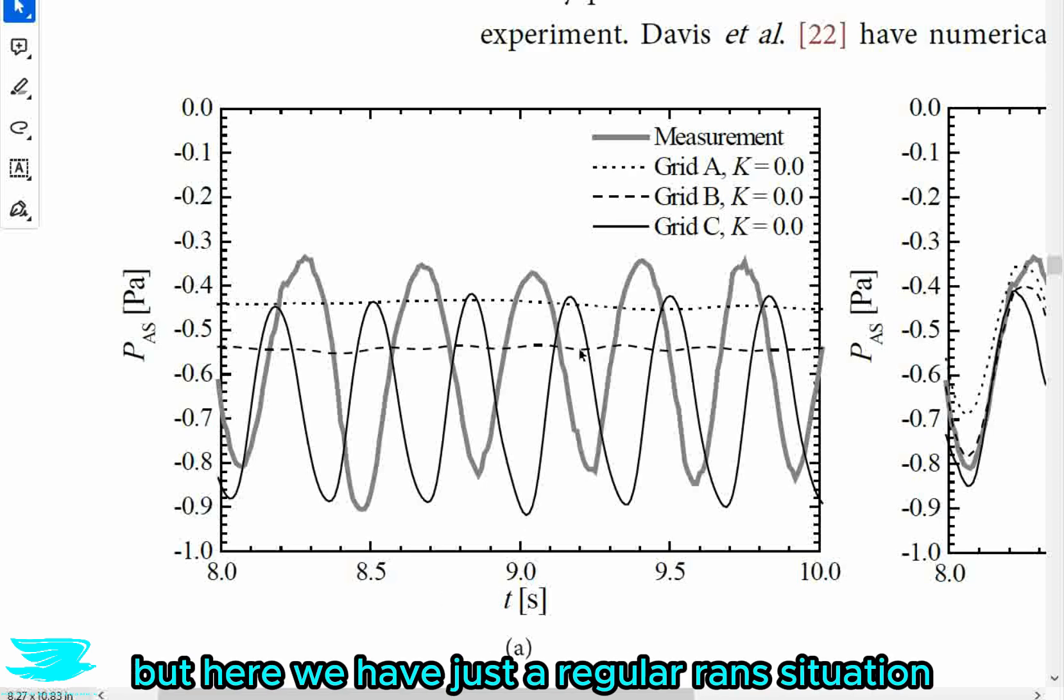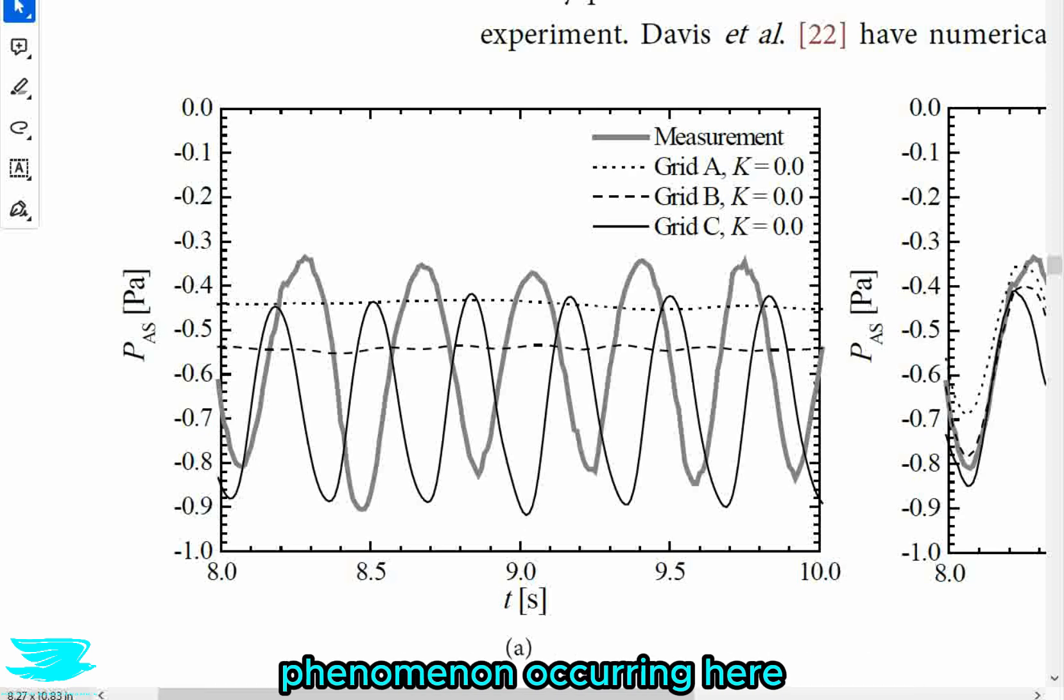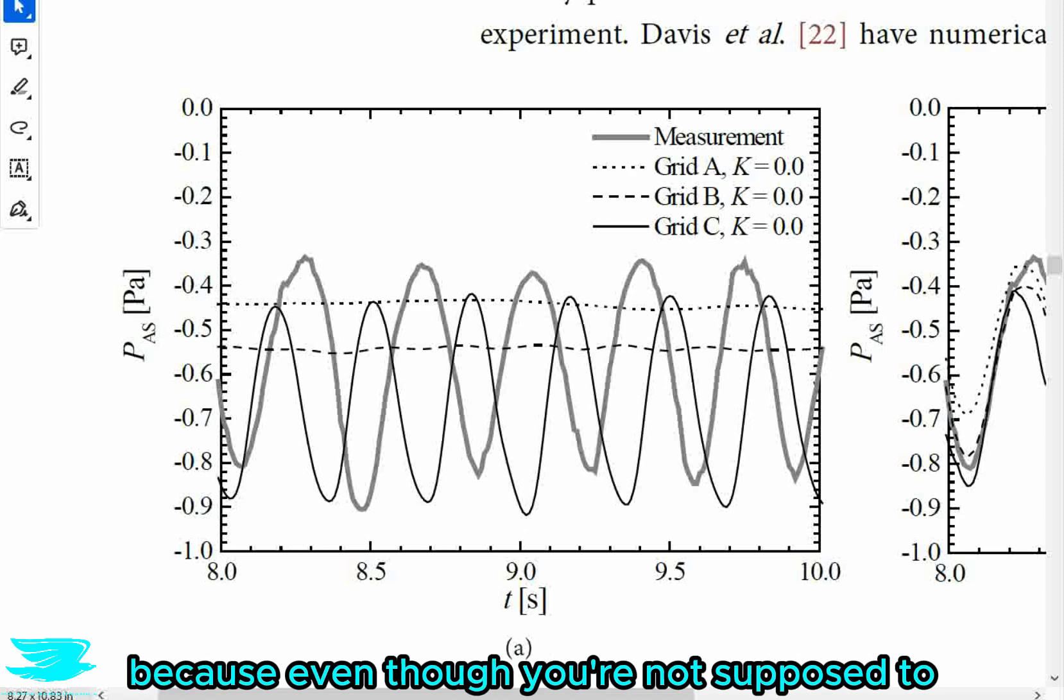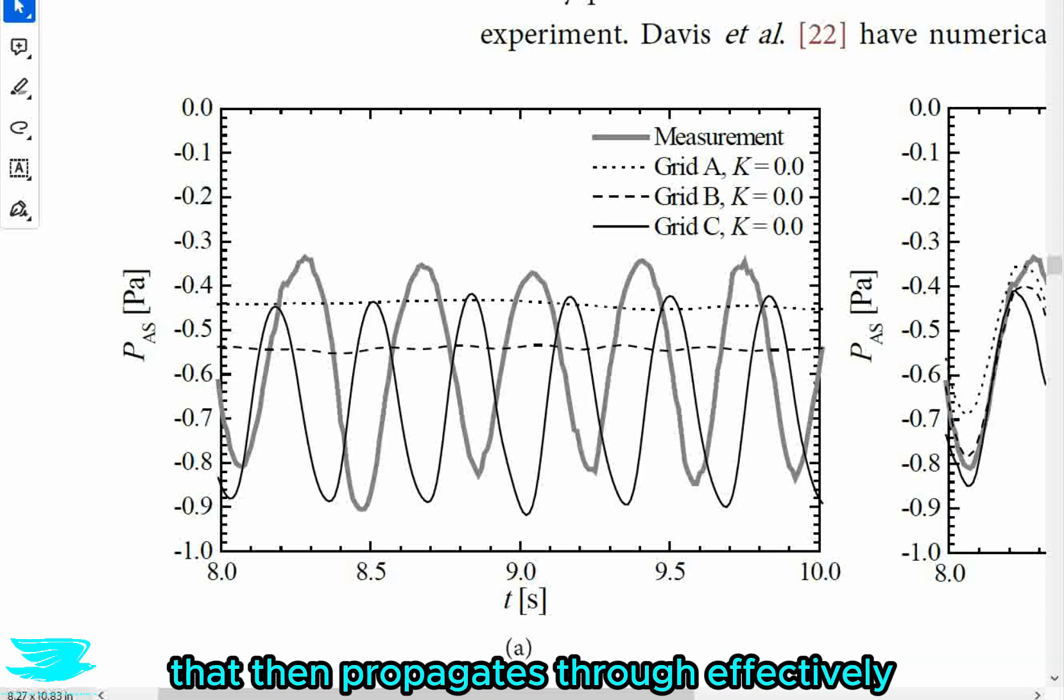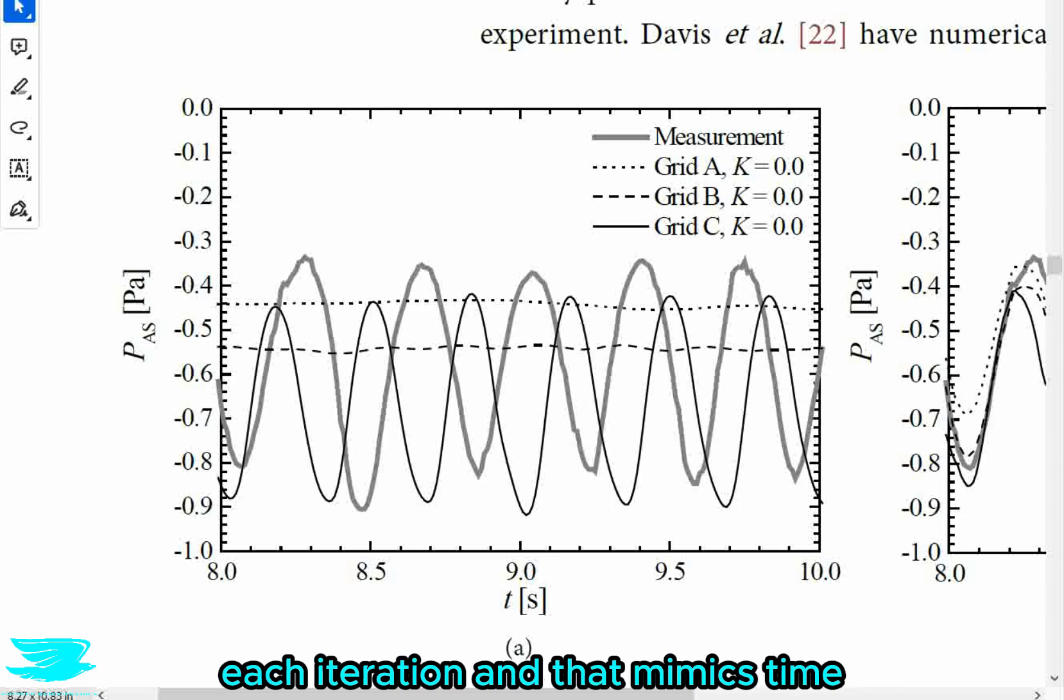Well, it turns out that this works out quite well. And now, not as well as LES or DES, but still, you get pretty good results with U-RANS, at least of the microscopic phenomena like von Karman vortex streets. But here we have just a regular RANS situation. And actually, you can get this phenomenon occurring here, because even though you're not supposed to, and this is because between iterations, there are imbalances in the system that then propagates through, effectively, each iteration, and that mimics time. It's not really time, it just mimics it.